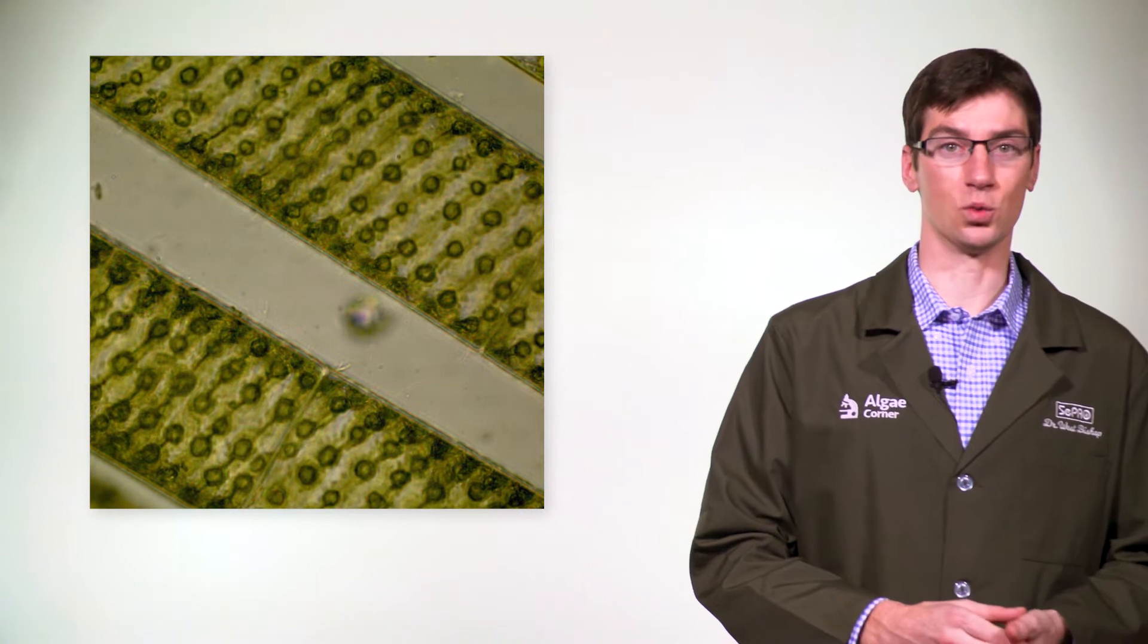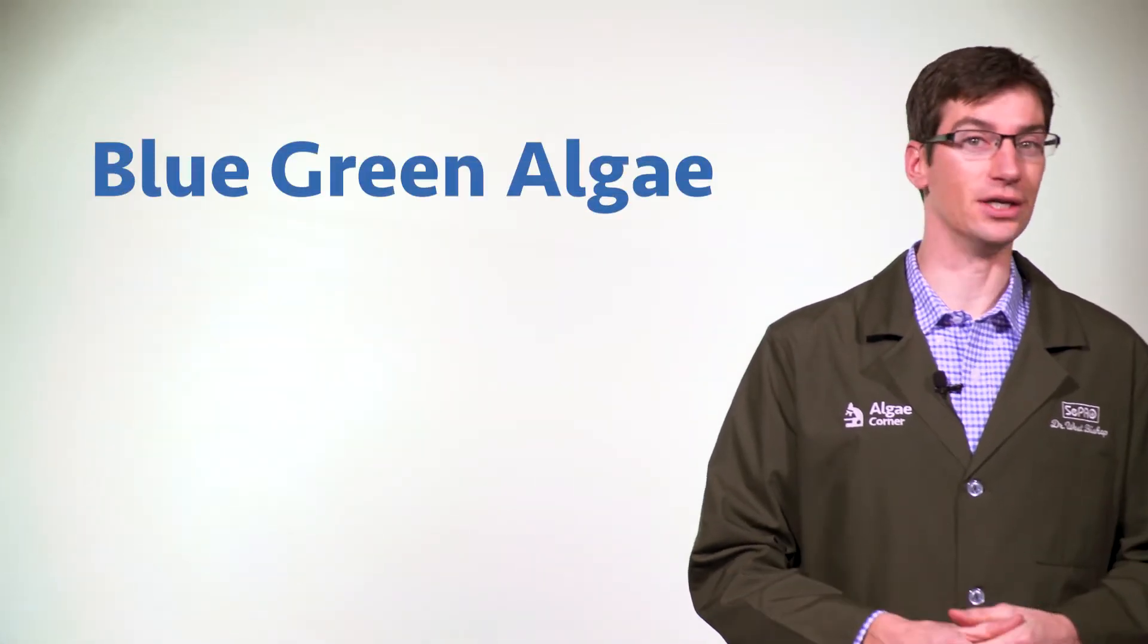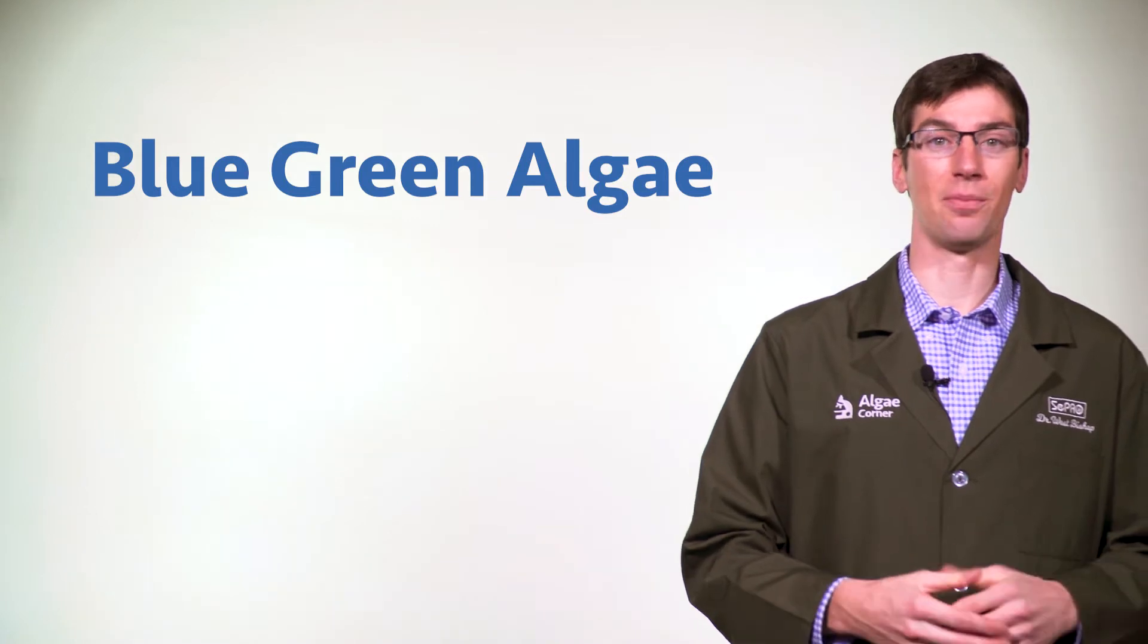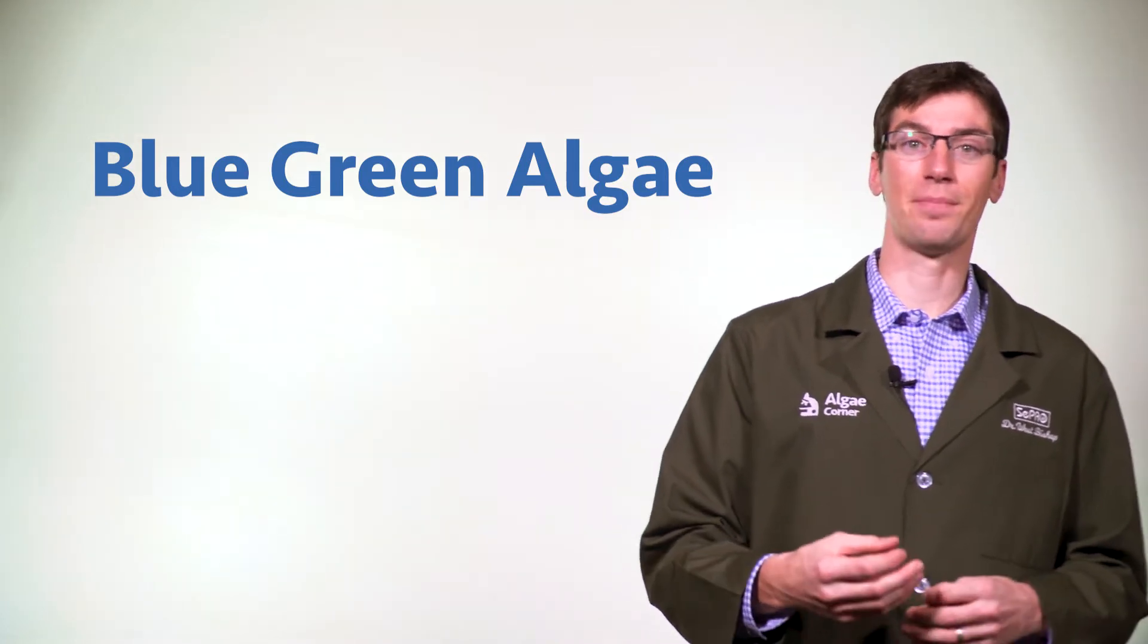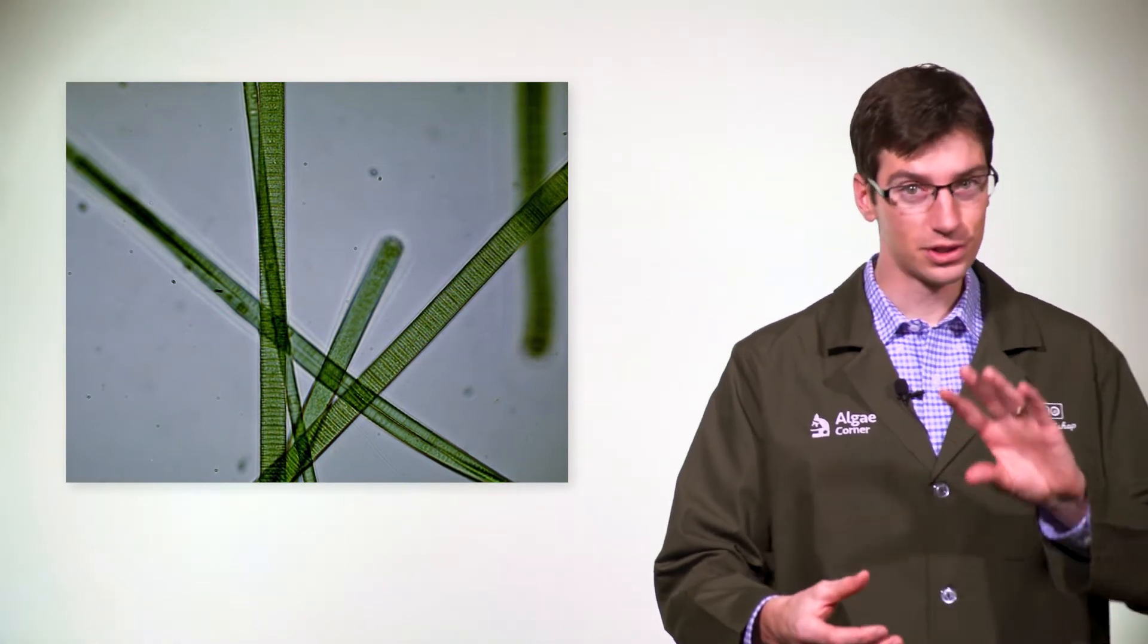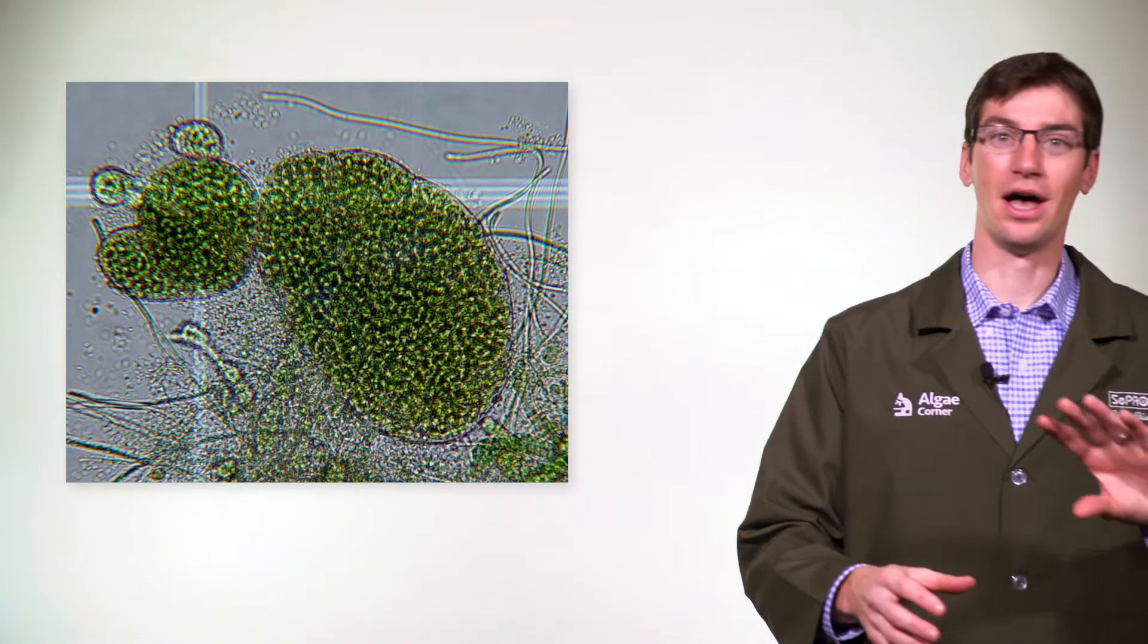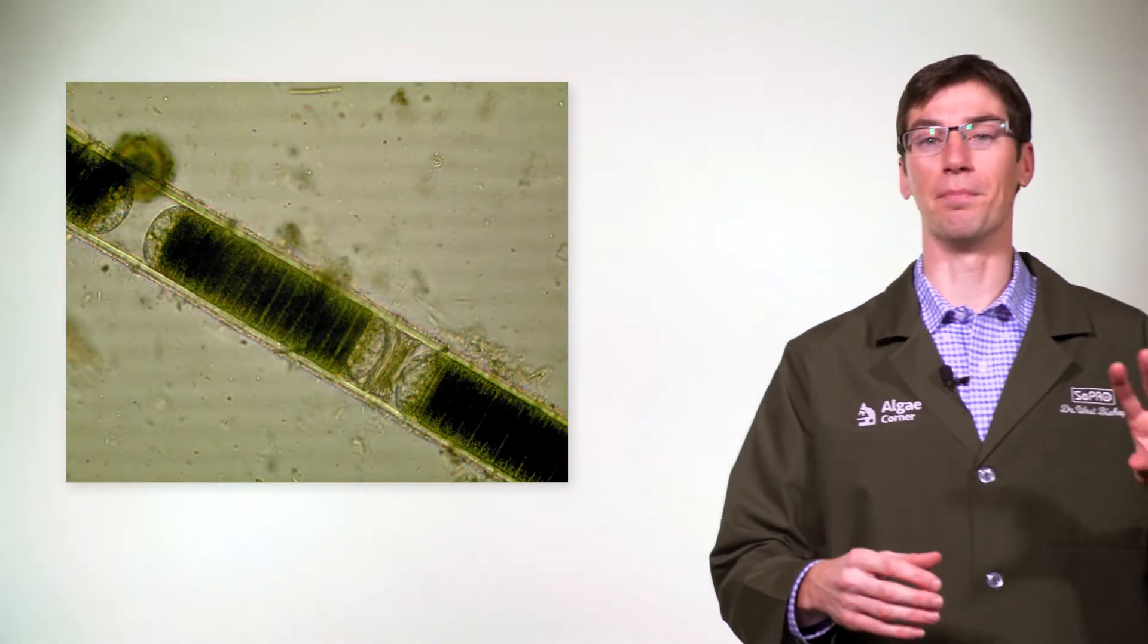The next group are the blue-green algae, also known as cyanobacteria. These contain the pigment phycocyanin, which is a blue-green pigment. As opposed to just chlorophyll, they also have this other pigment that makes them appear a darker green, sometimes even black in color with this darker blue-green pigment.